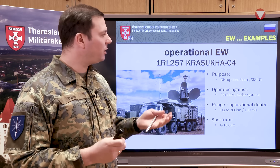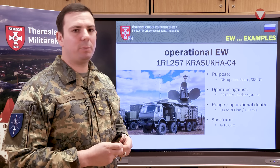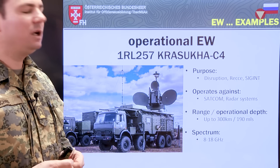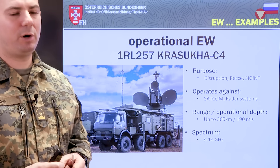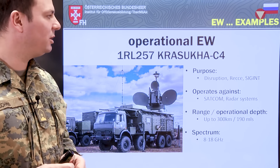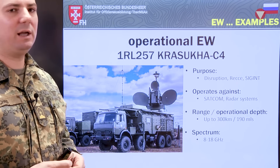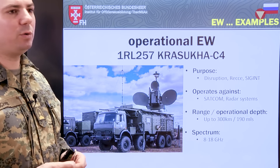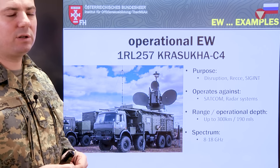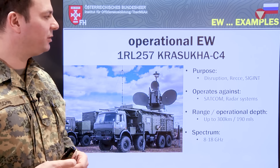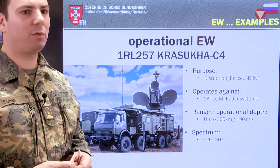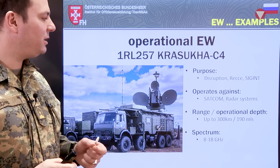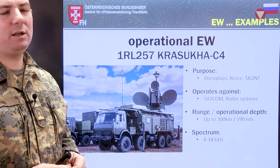The Krasuke IV system's main purpose is disruption, reconnaissance, and signal intelligence. It usually operates against satellite communication and radar systems, with a range up to 300 kilometers — around 190 miles — and a spectrum of 8 to 18 GHz.